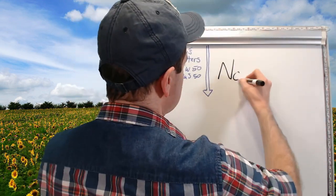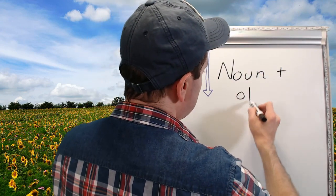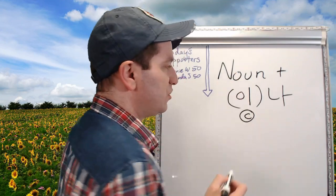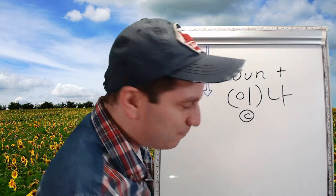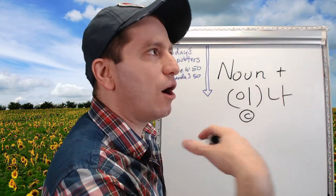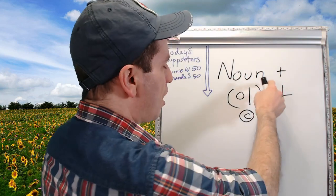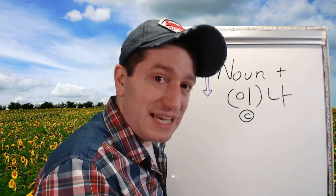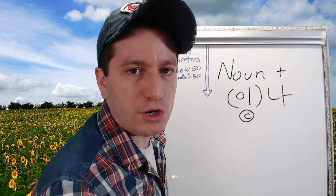The first topic we're going to learn about is 이나. To make it, you take a noun and attach 이나. When the noun ends in a consonant, you attach 이나. If the noun ends in a vowel, you add just 나 to the end. If there was an object marker or subject marker on the noun before you added 이나, you should remove it — 이나 takes the place of any subject or object marker.